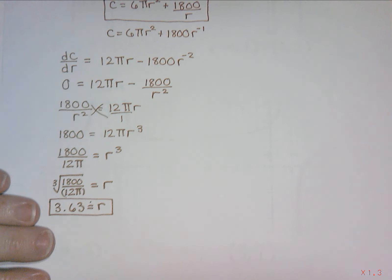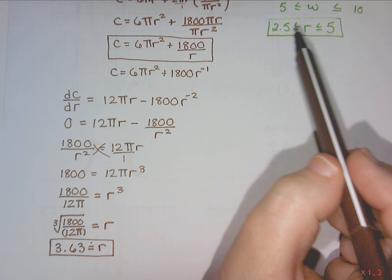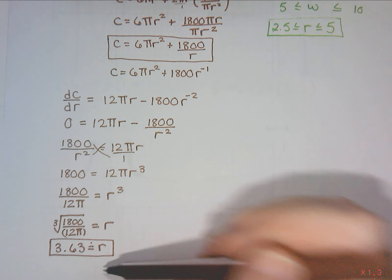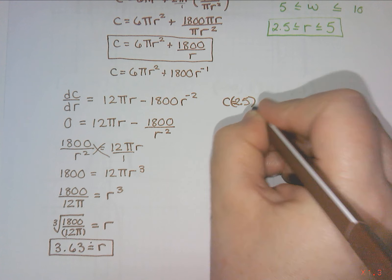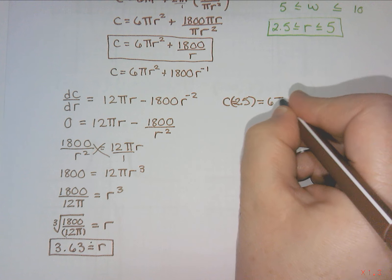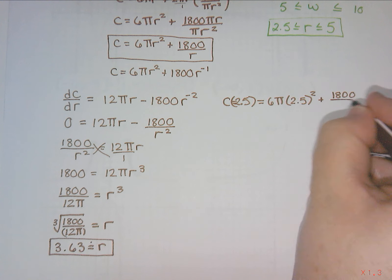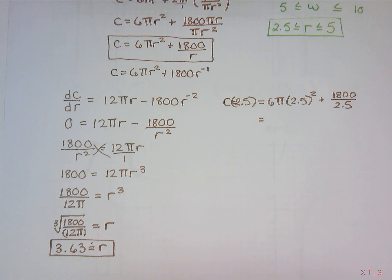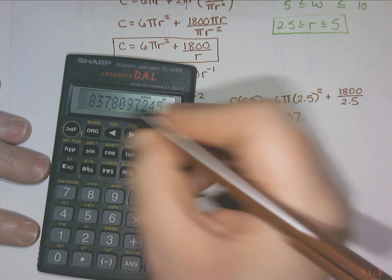I get approximately 3.627 or 3.63 as my approximate radius. Is that within my domain? Well, it is between 2.5 and 5, so we should be good. So all I need to do now is calculate the cost at 2.5, the cost at 5, and the cost at 3.63. I am going to use that equation. So 6 pi r, so 2.5 squared, plus 1800 divided by 2.5. And I got $837.81.